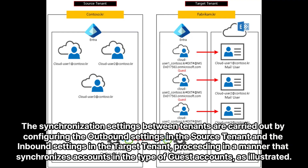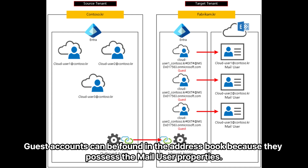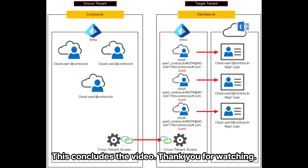The synchronization settings between tenants are carried out by configuring the outbound settings in the source tenant and the inbound settings in the target tenant, synchronizing accounts as Guest Accounts. Guest Accounts can be found in the address book because they possess the Mail User properties. This concludes the video — thank you for watching.